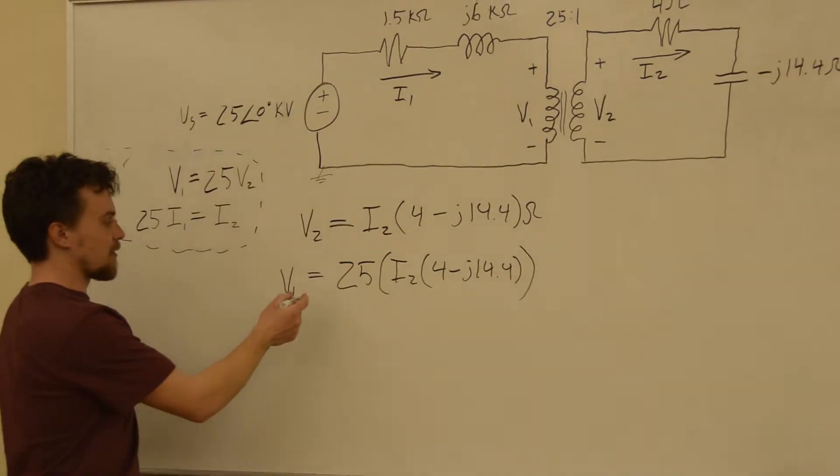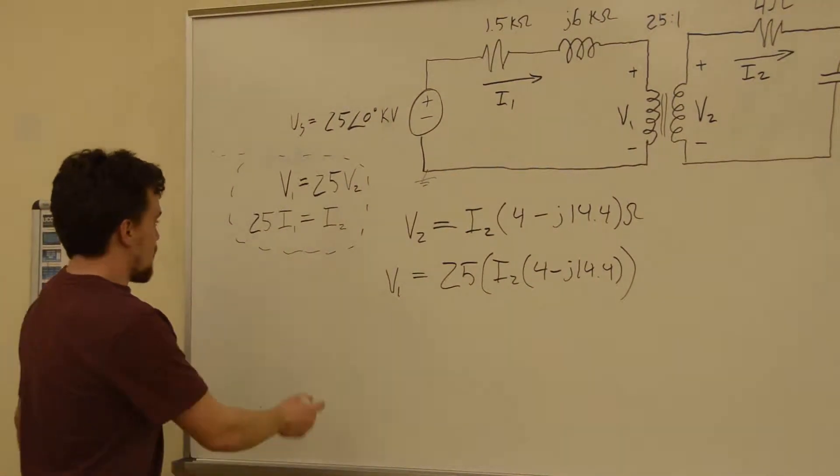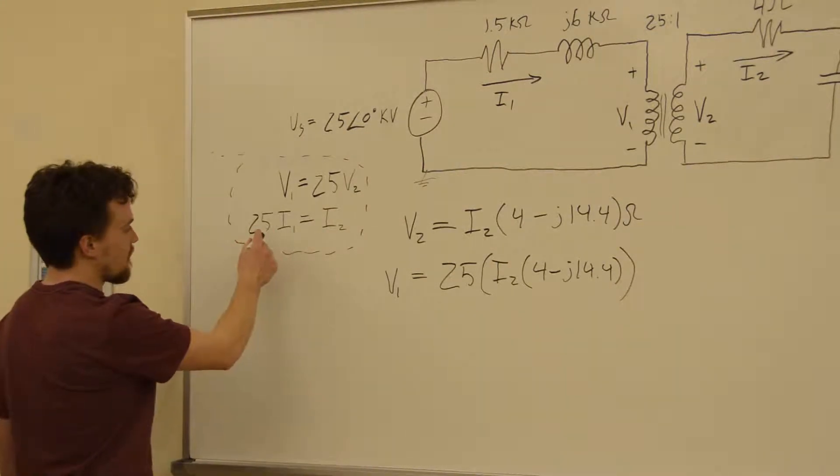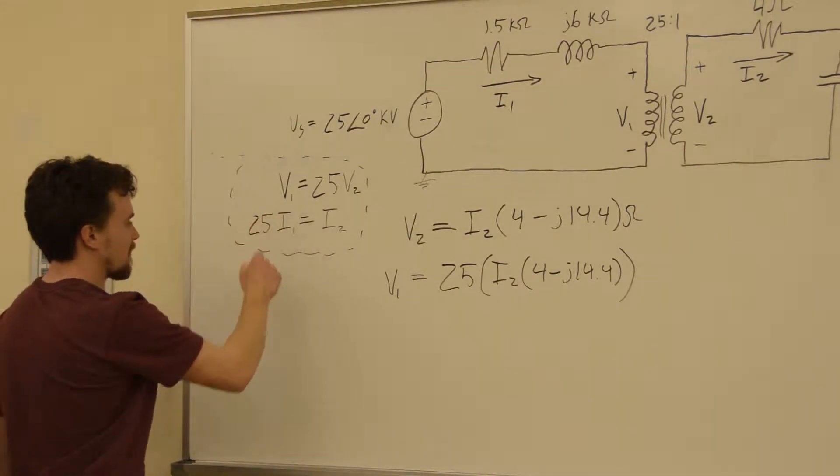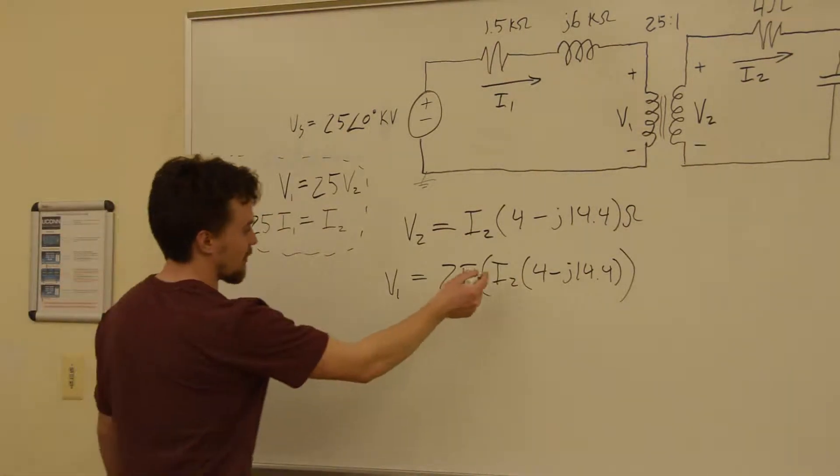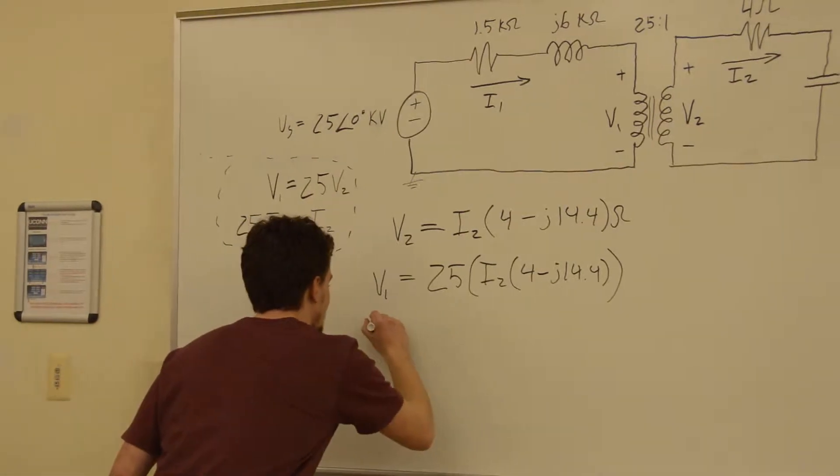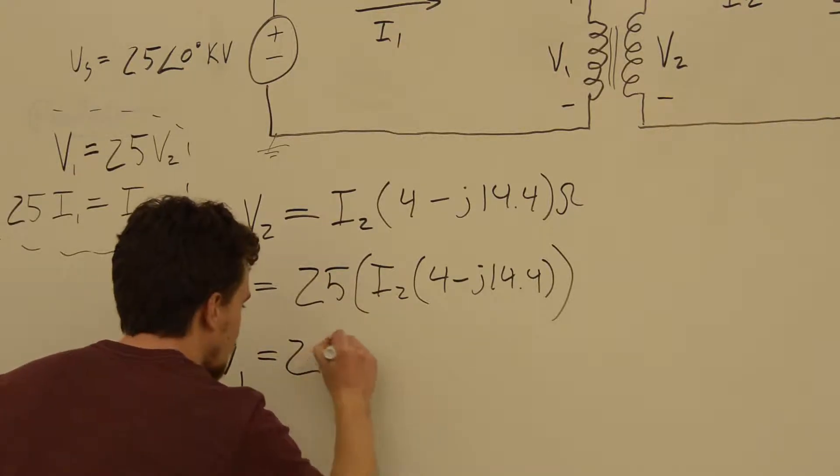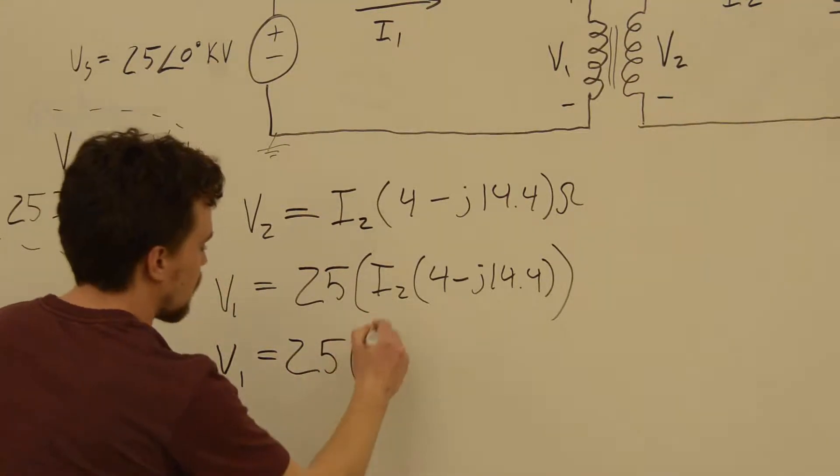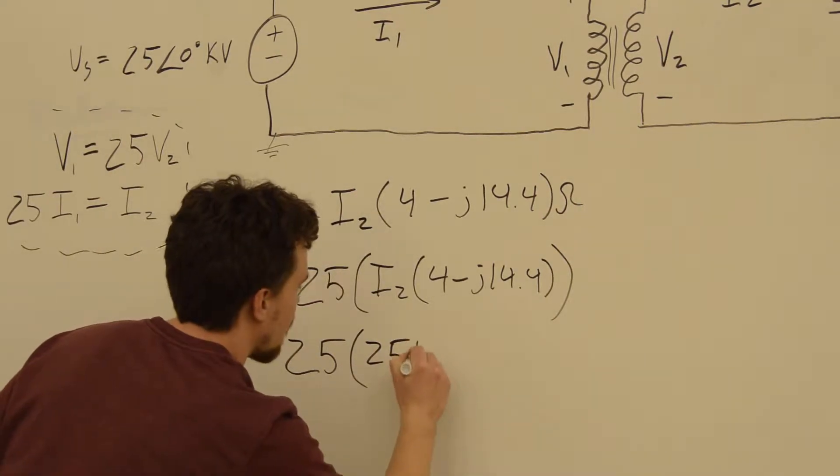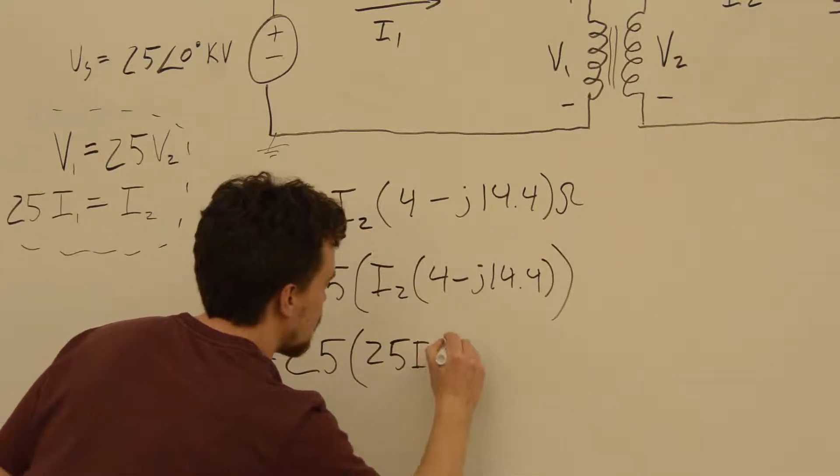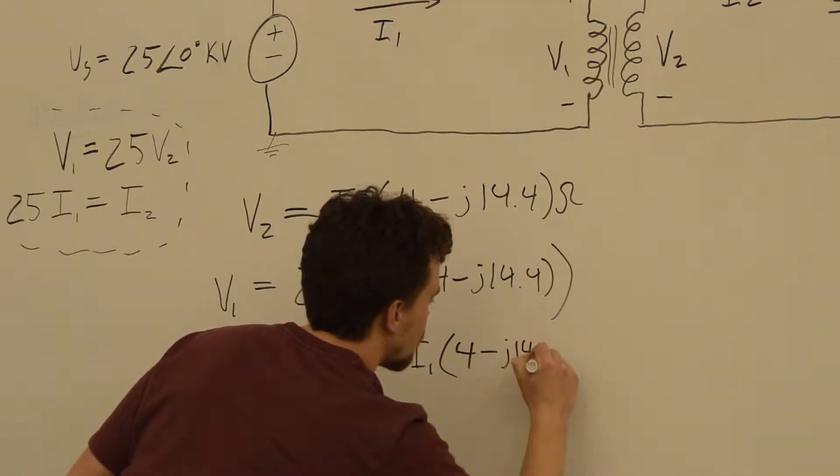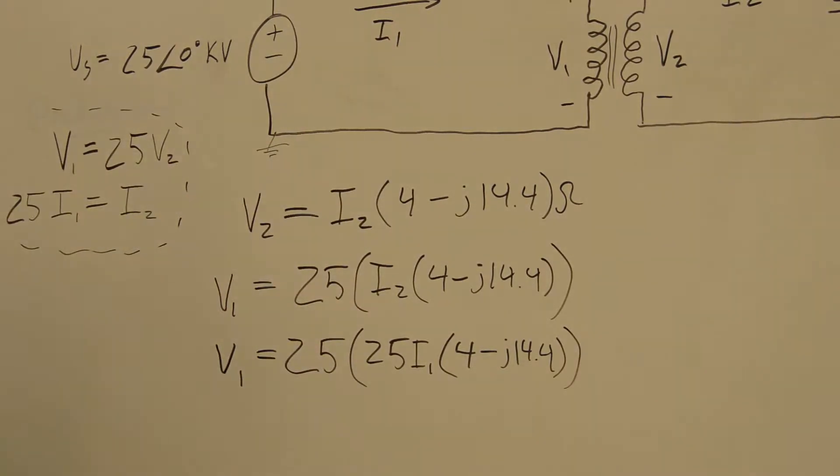And we also know that I2 is equal to 25 times I1. So we can substitute 25 I1 into this equation where we see I2. So then we'll get that V1 is equal to 25 times 25 again, I1 times 4 minus J 14.4.